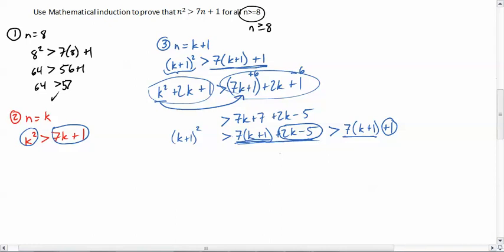And so, therefore, check, we have proven, therefore, that k plus 1 squared is greater than 7 times k plus 1 plus 1.